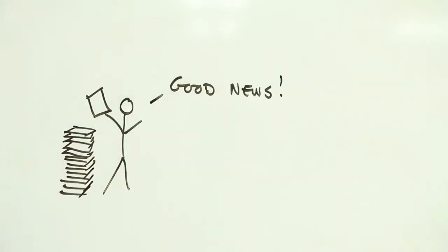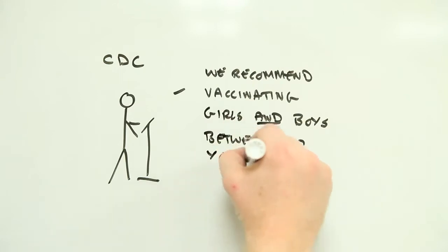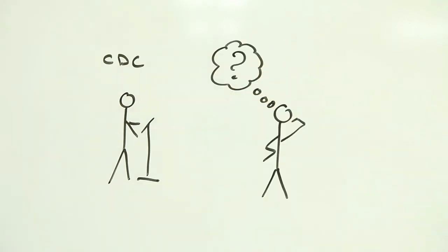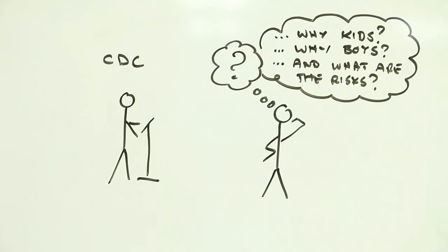The development of these vaccines was great news for public health and prompted the US Centers for Disease Control and Prevention to recommend that girls and boys between the ages of 11 and 12 are vaccinated against HPV. But this advice raises some challenging questions. Why children? Why boys as well as girls? And what, if any, are the risks of getting vaccinated?